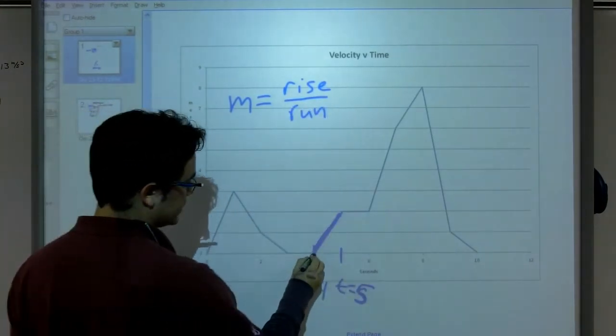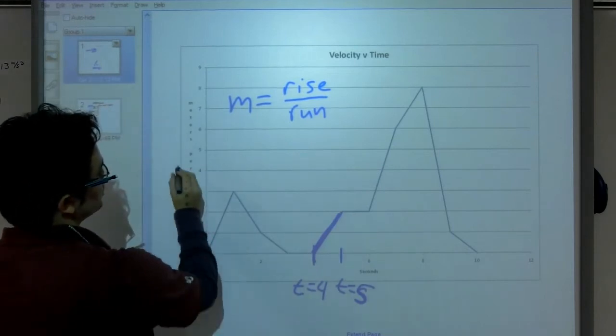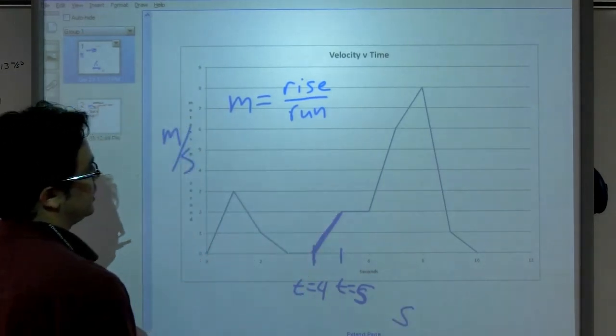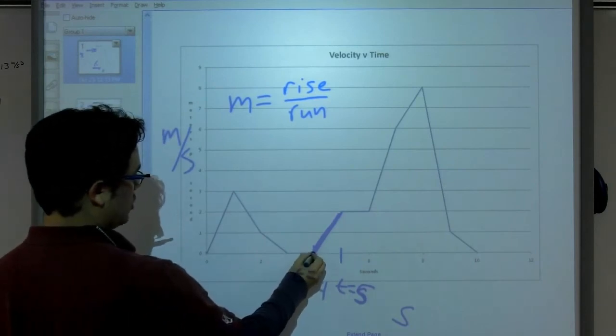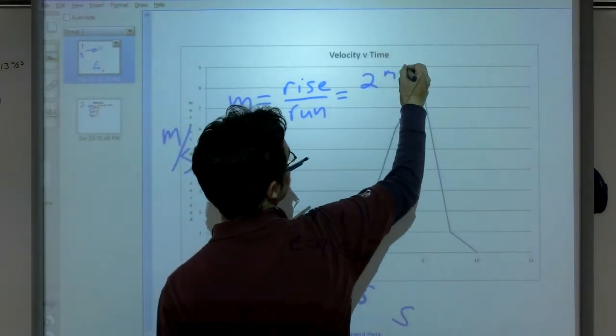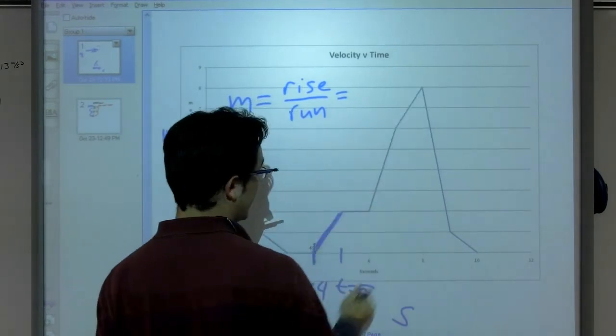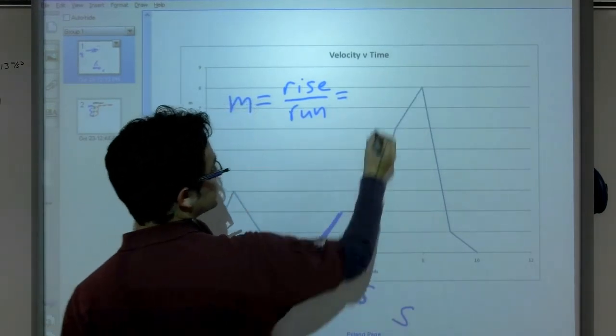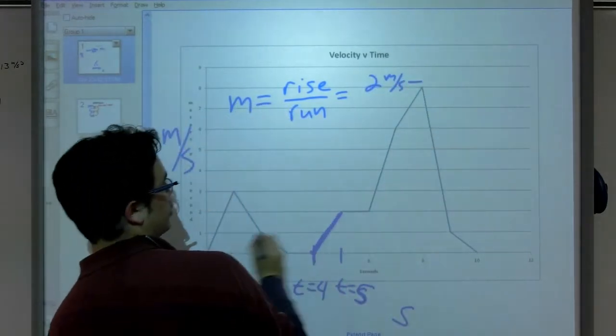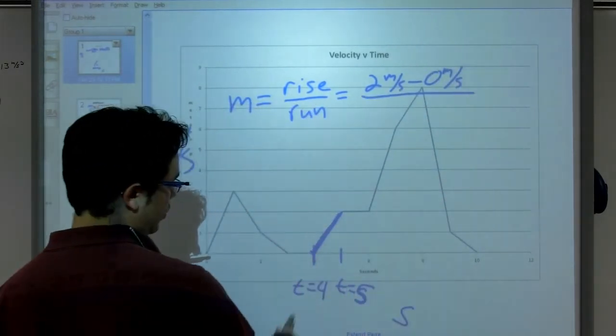Okay, so my rise, I go from 0 meters per second. That may be hard to read, but my units are meters per second. And down here, I have seconds as my unit. So my rise is from 0 all the way up to, looks like 2 meters per second. Oh, I'm sorry. My rise is my final y, so 2 meters per second, minus my initial y, which is going to be 0 meters per second, divided by, okay, my run.